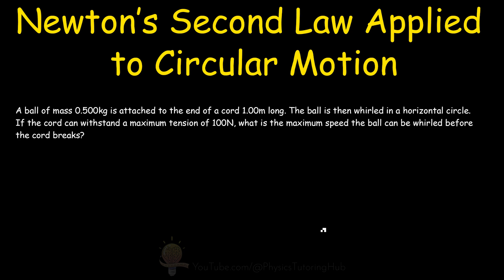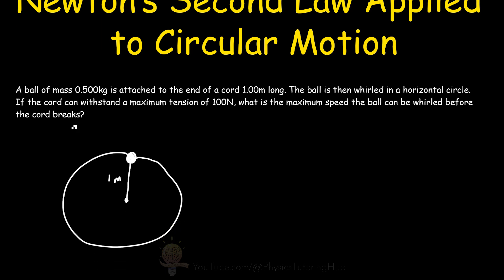If we have a ball that has a mass of 0.5 kilograms, attached to the end of a cord that's one meter long, and the ball is then whirled in a horizontal circle — if this cord can withstand a maximum tension of 100 newtons, what is the maximum speed of this ball before this cord breaks? Our formula for the radial force pointing towards the centre of the circle is equal to the object's mass multiplied by the velocity squared divided by the radius of the circle.